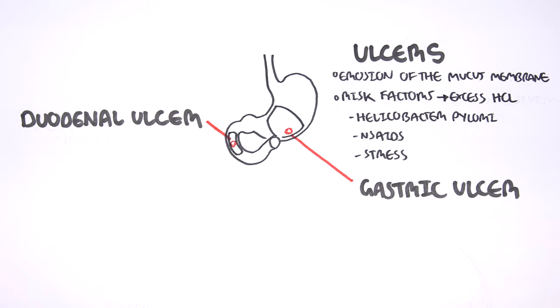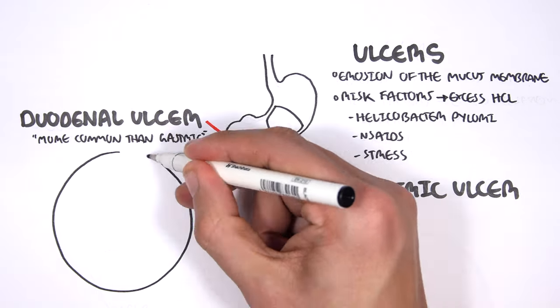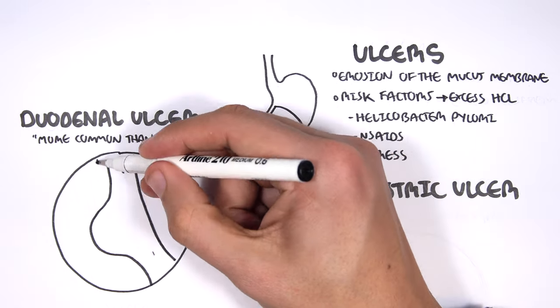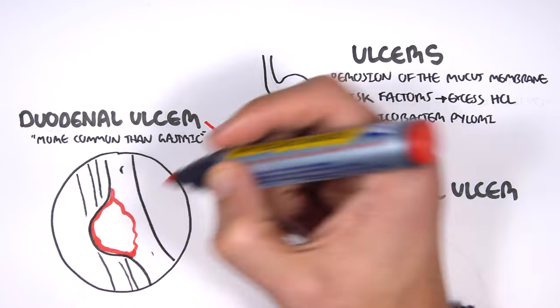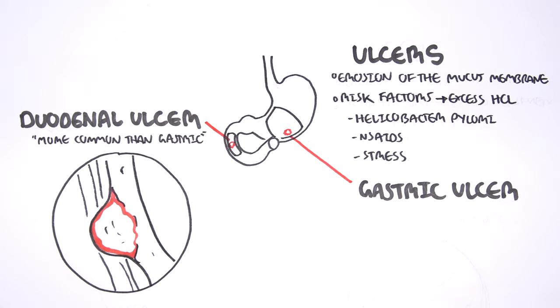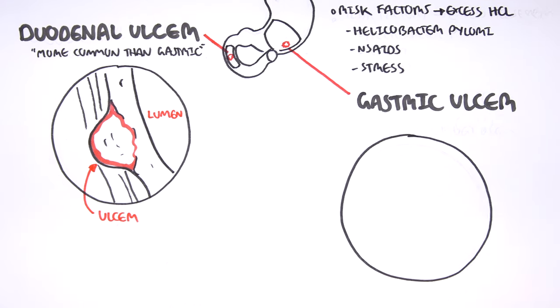We can have duodenal ulcers and gastric ulcers. A duodenal ulcer is more common than a gastric ulcer. Here I'm drawing the layers of the duodenum. Here's the lumen, and here we have an ulcer, which is an erosion that goes down through the mucosa and submucosa. Gastric ulcer, similar thing.